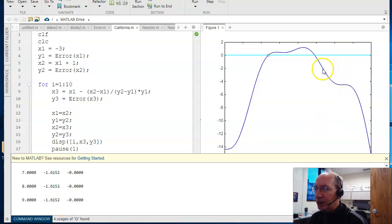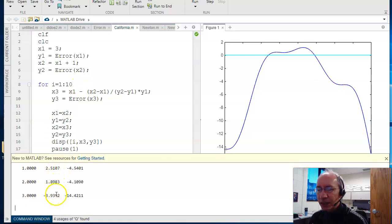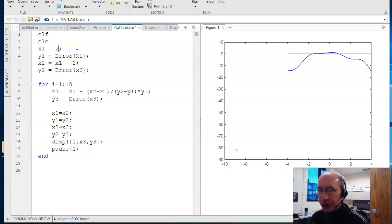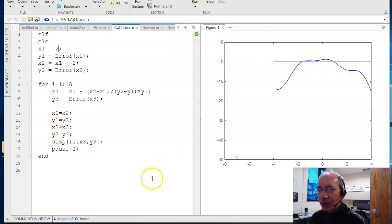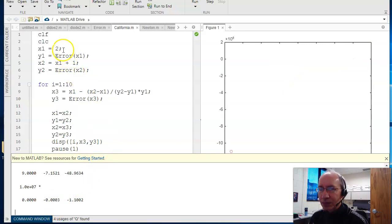If I make the other guess closer over here, say, plus 3, and run it. There's my first guess, second guess, third guess. Nope, it's off in La La Land. It helps to have a good initial guess. If instead I try 2, that's closer to the answer. Again, off in La La Land. That's California method.